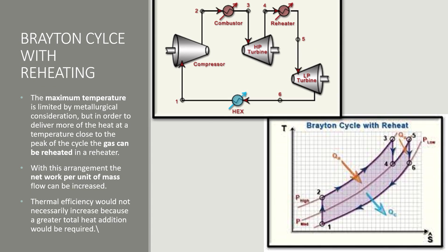Now we have the Brayton cycle with reheating. We use this because the turbine cannot operate at very high temperatures due to metallurgical problems. So we divide it into two parts: high pressure and low pressure turbines. After the high pressure turbine, we have a reheater where we reheat the gases, and then a low pressure turbine handles the expansion in the 5 to 6 process. In this overall cycle, we increase the net work done per unit mass, though thermal efficiency need not increase because the overall heat added to the system also increases.